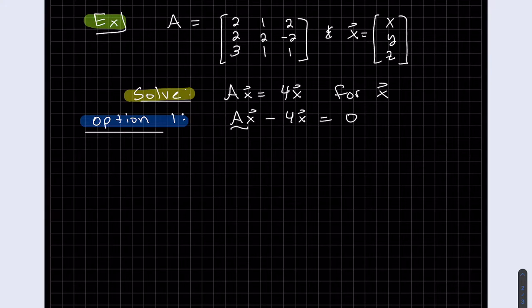So we go A minus 4, but 4 is a constant, so what we're going to do is times that by the identity matrix I, and then we can distribute that in there. That I will be the 3x3 identity because this is a 3x3 matrix, so if you want to write that we can, but it's not necessary.